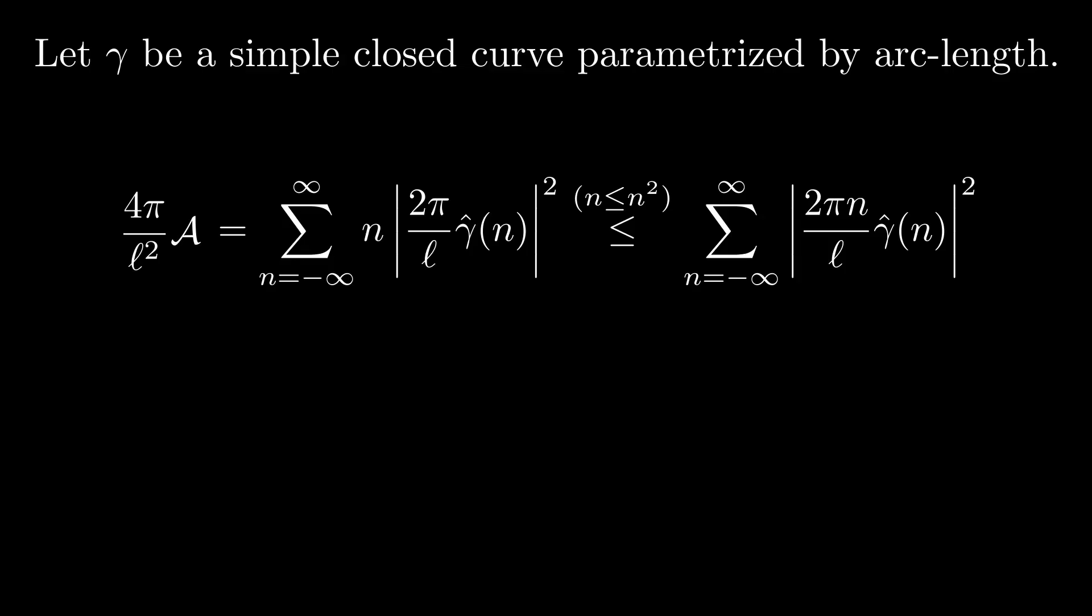For all n except 0 and 1, n is strictly smaller than n squared. So we have equality here if and only if all Fourier coefficients for n not equal to 0 or 1 vanish.